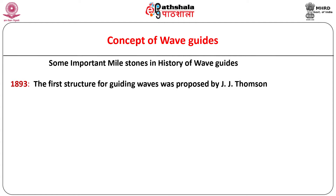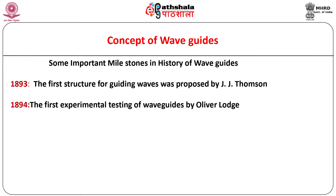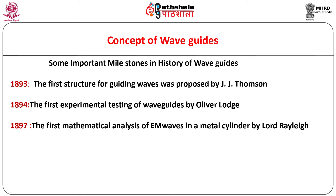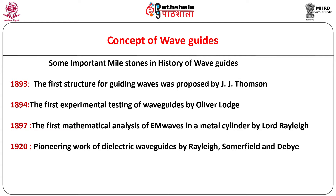The first structure for guiding waves was proposed by J.J. Thomson in 1893 and was first experimentally tested by Oliver Lodge in 1894. The first mathematical analysis of electromagnetic waves in a metal cylinder was performed by Lord Rayleigh in 1897. Rayleigh, Sommerfeld and Debye are famous for their pioneering work on dielectric waveguides such as optical fibers, at around the year 1920.